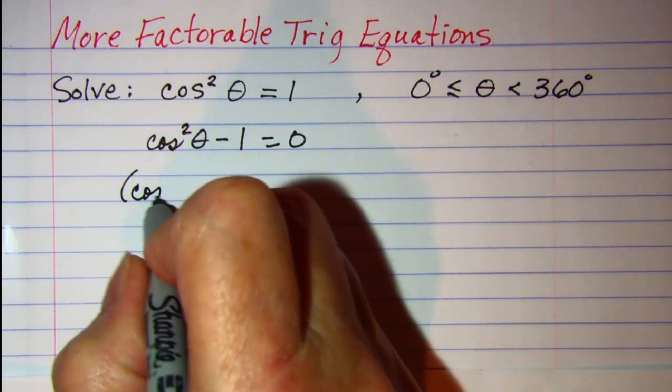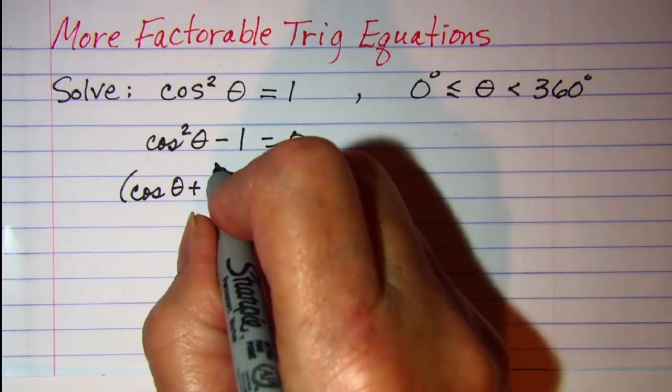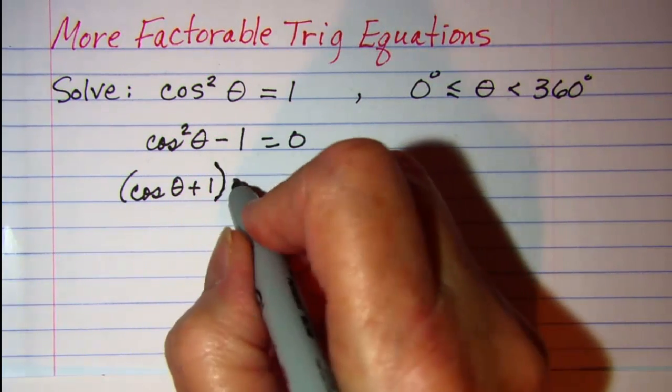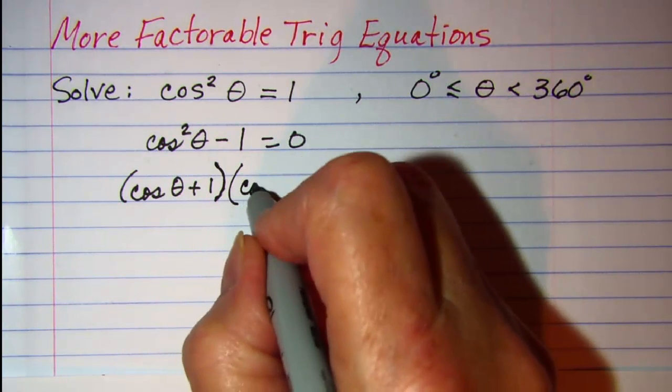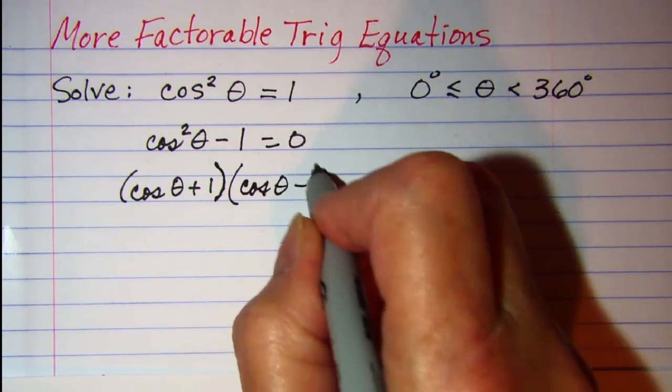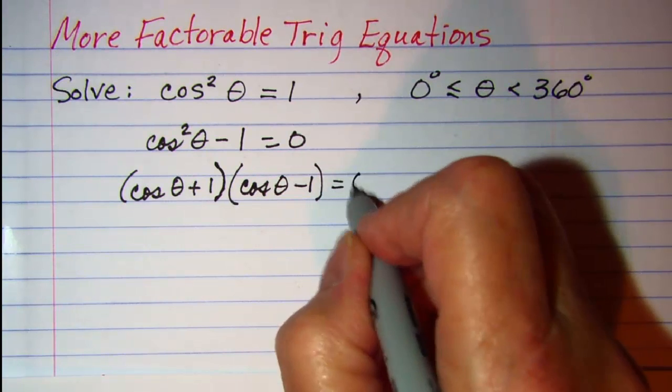So I have cosine theta plus 1 multiplied by cosine theta minus 1 and that product is equal to 0.